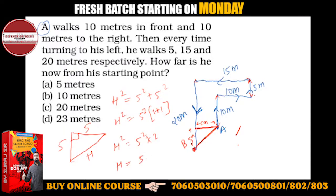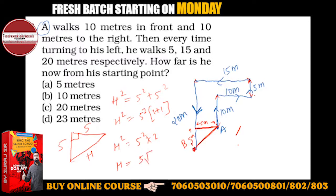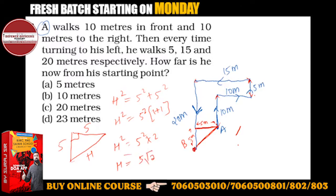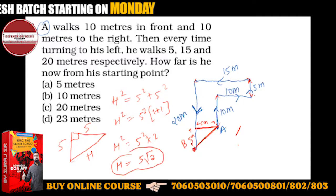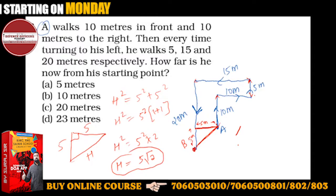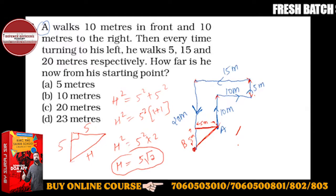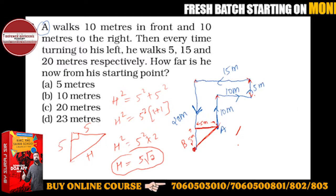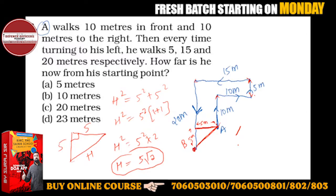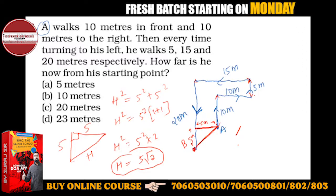Then H equals 5 root 2 — that will be your answer. So 5 root 2 is coming. This is not directly given in the options, but square root of 50 is nothing but 5 root 2.